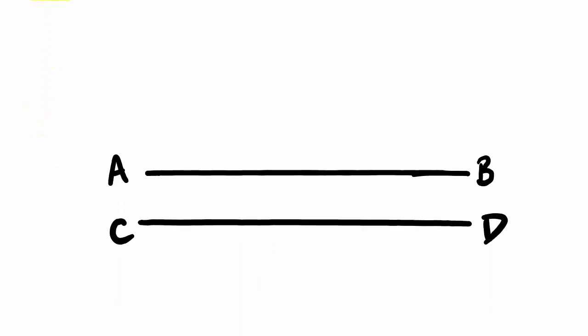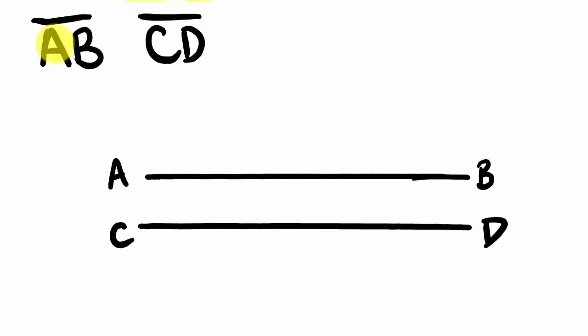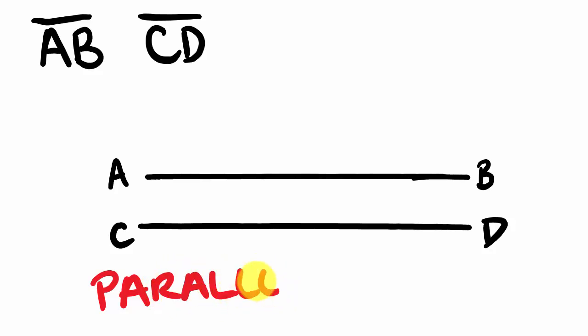Let's consider two lines. I'm going to put two lines up and name them: we would call these lines AB and the second line CD. We write them by writing the points of the lines A and B with a line over the top. Now if you look at these lines, they're running in the same direction — they could go on forever and never cross. Lines like this are said to be parallel. We put little arrows to denote parallel lines.